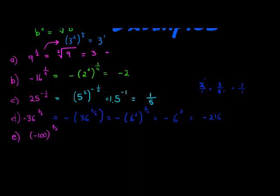Now 6 to the power of 3 is 216, so that's negative 216. Final one, we have negative 100. And this time you can see the negative and the 100 is in a bracket, and the whole thing is to the power of 3 over 2. So here it's important to note that in the end this is going to be negative 100 to the power of 3 to the power of a half.